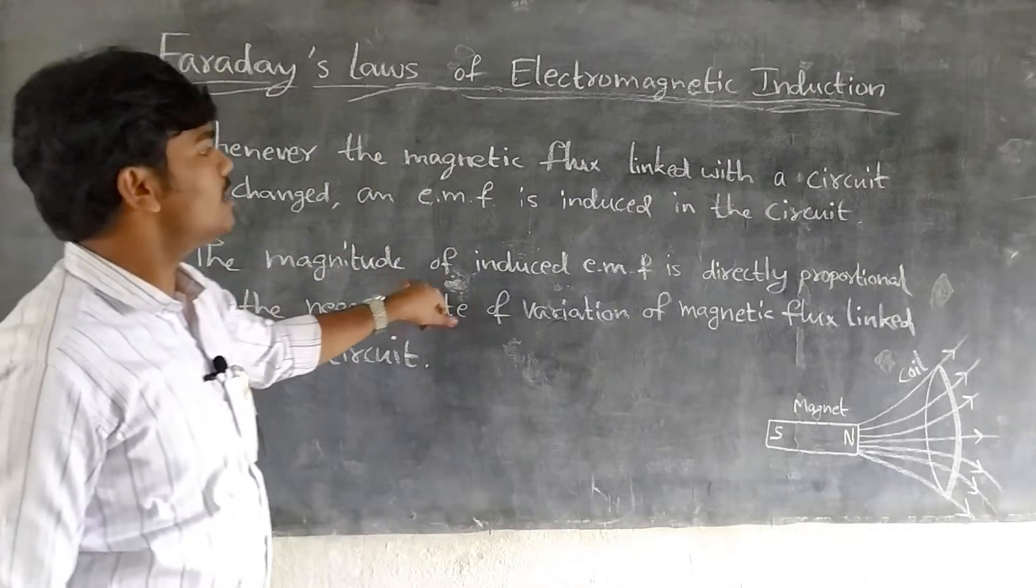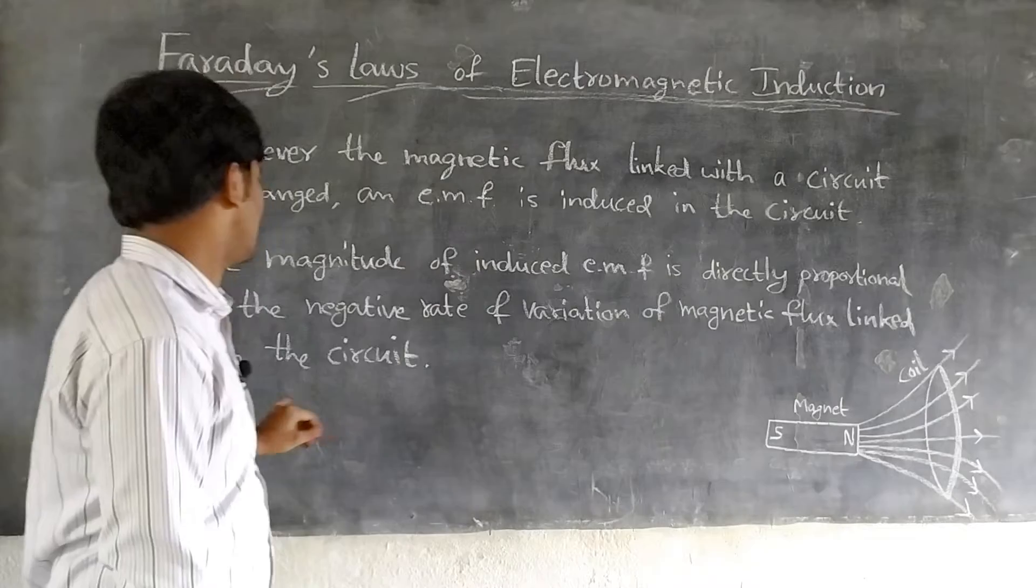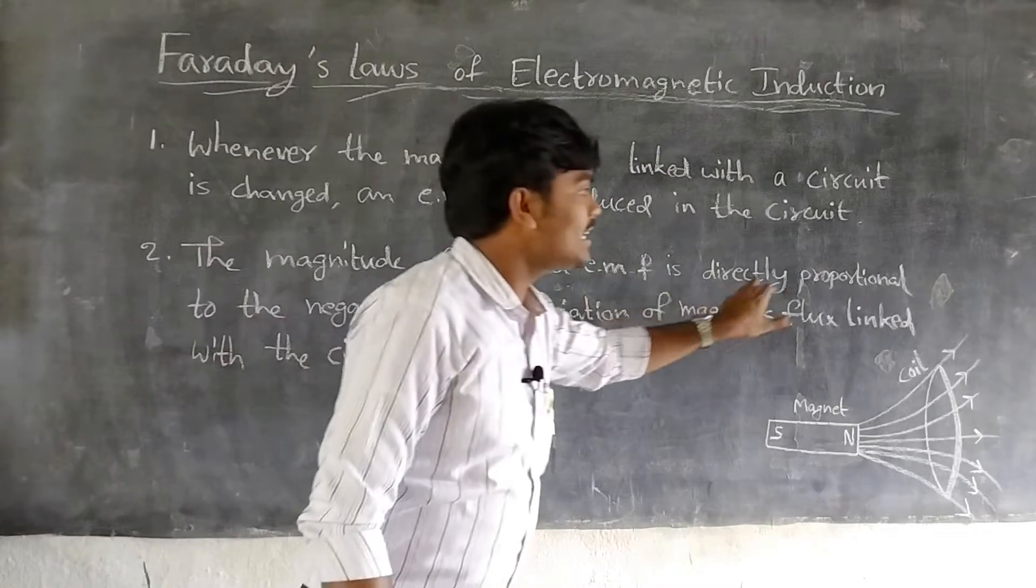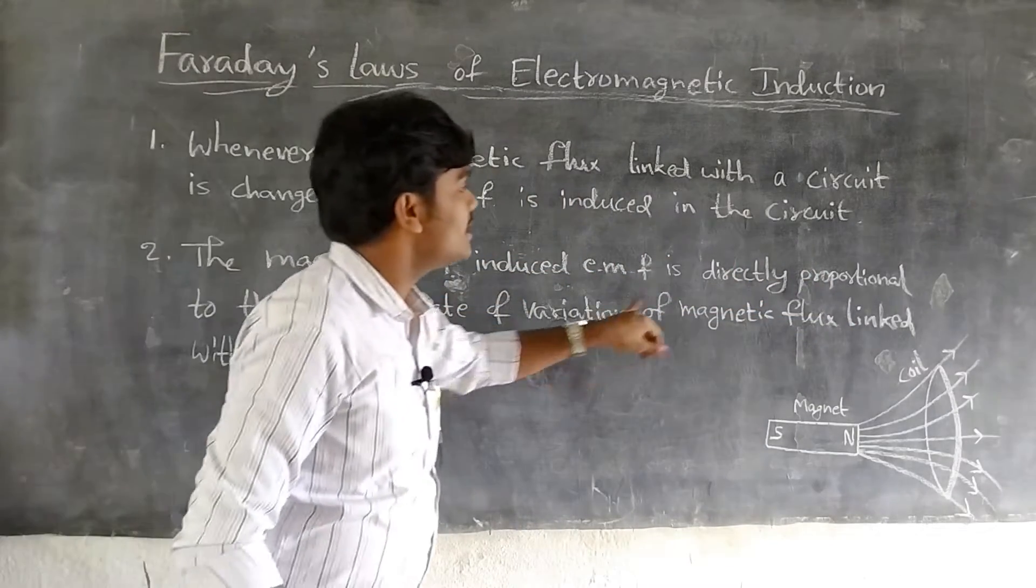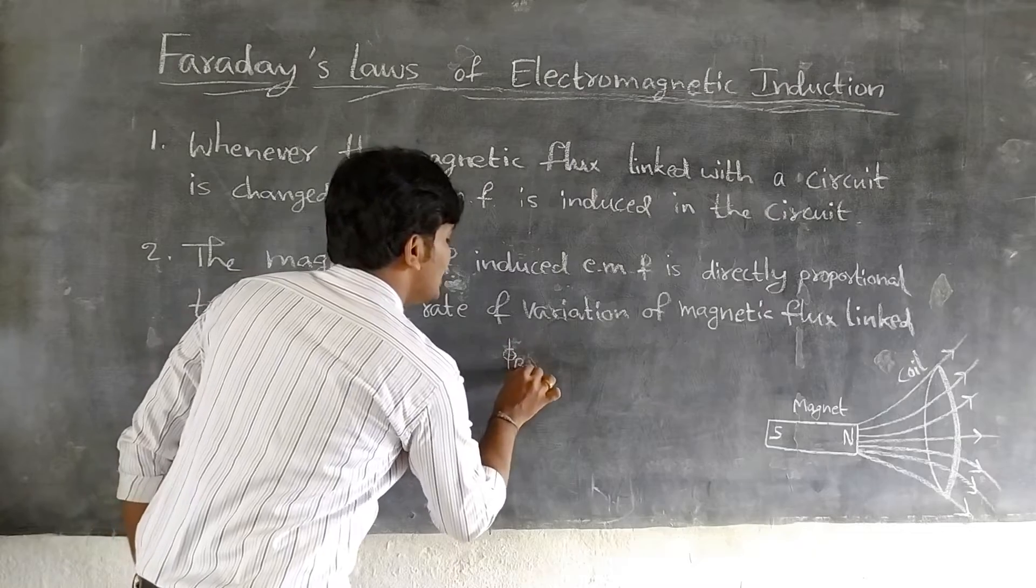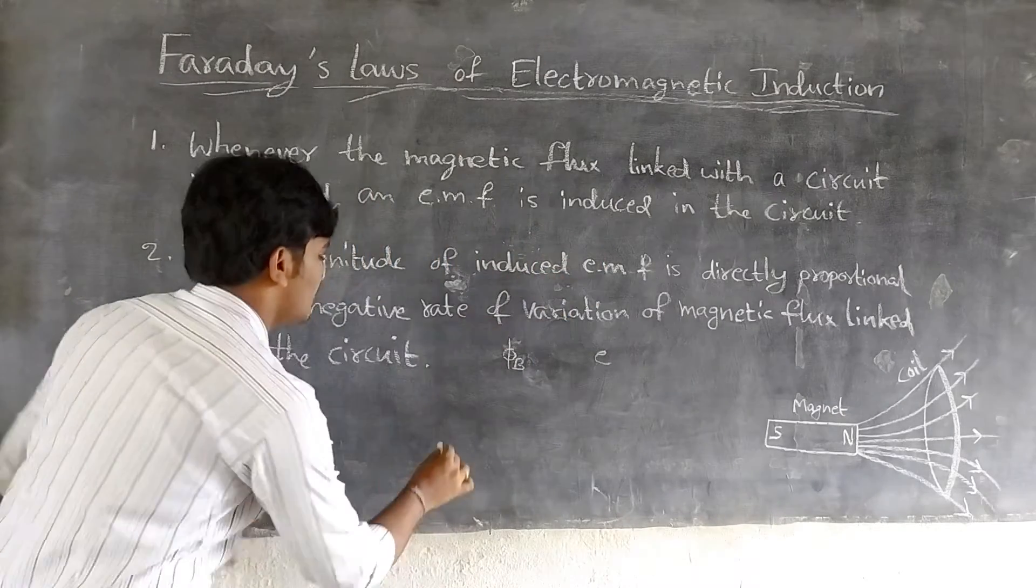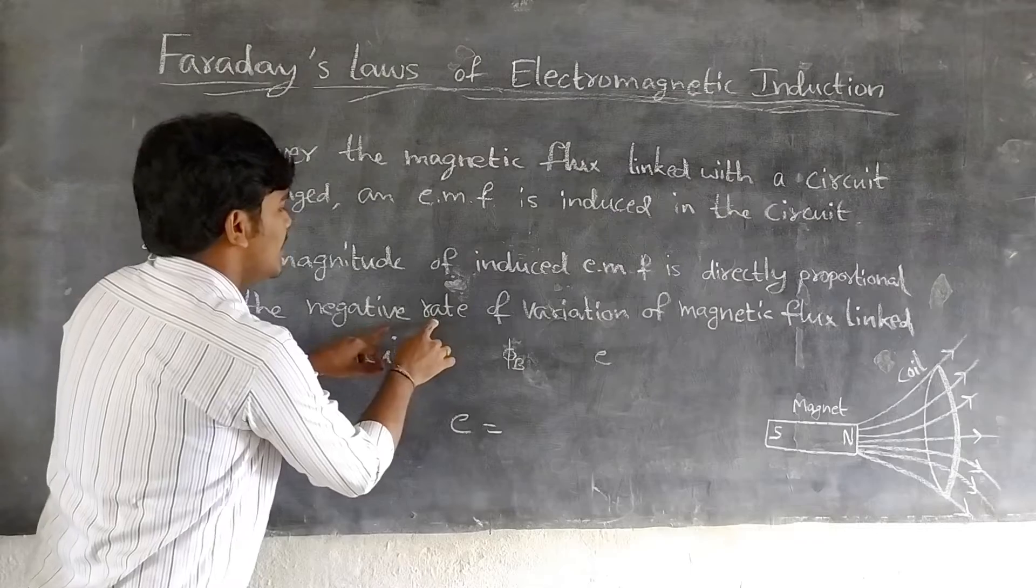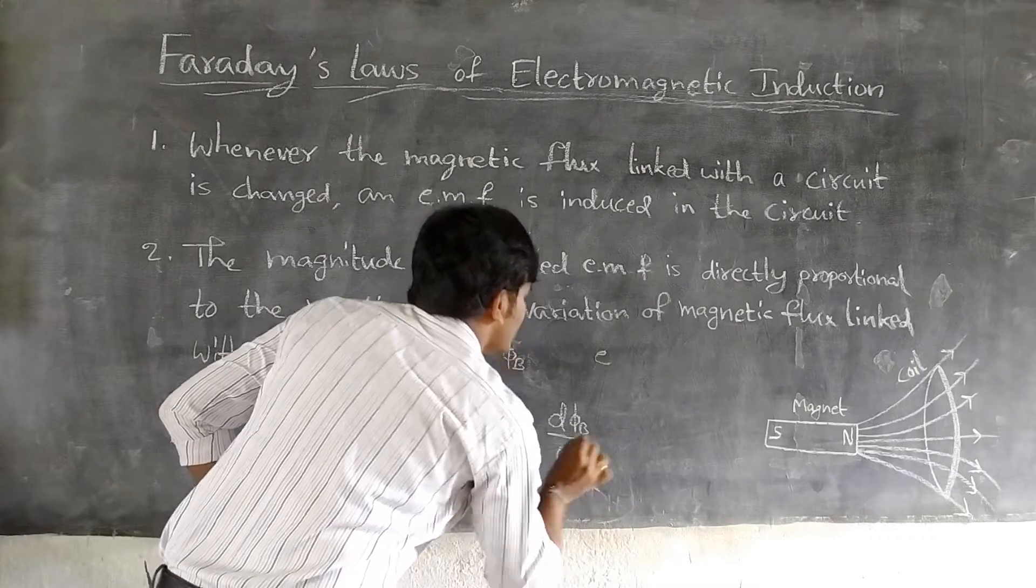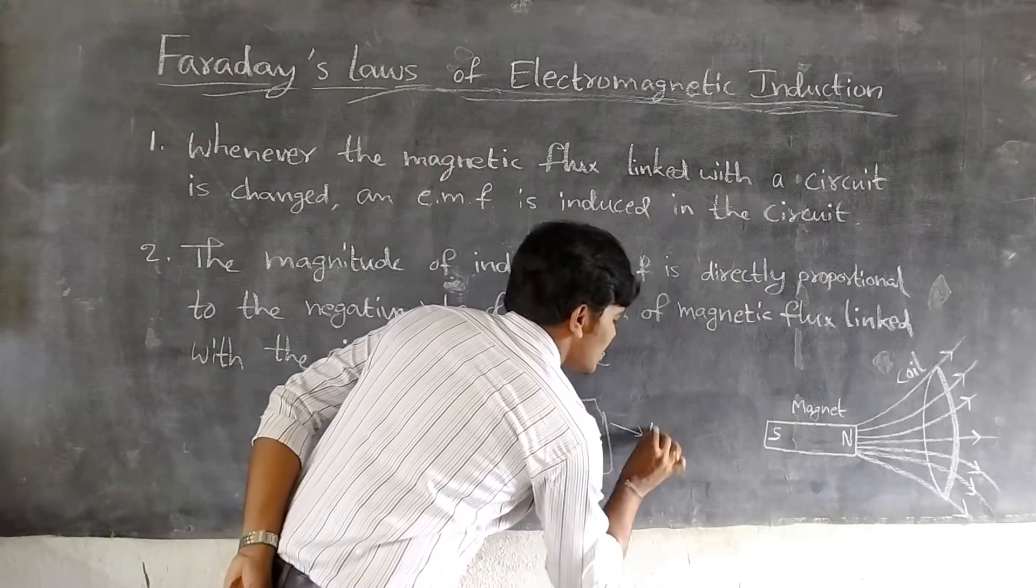Now the second one is: the magnitude of induced EMF is directly proportional to the negative rate of variation of magnetic flux linked with the circuit. Now we can write the induced EMF, E is equal to minus d(phi B) by dt. So this is the expression for the second law of Faraday. This law is also known as Neumann's law.